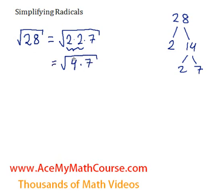So the square root of 28 is equivalent to the square root of 4 times 7. And remember that if we're multiplying numbers within the square root, we can actually split up the square root like this. So the square root of 4 times 7 is equal to the square root of 4 times the square root of 7.